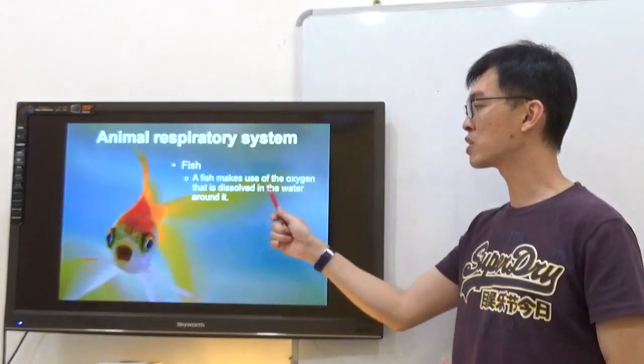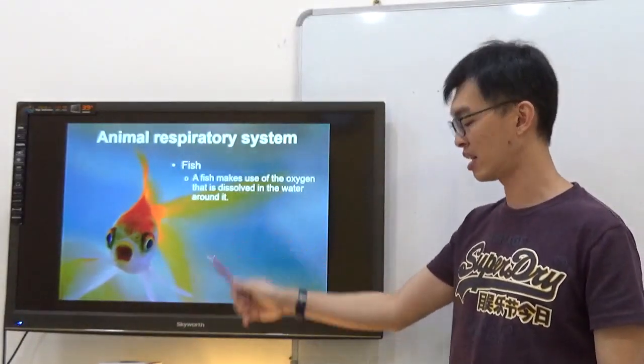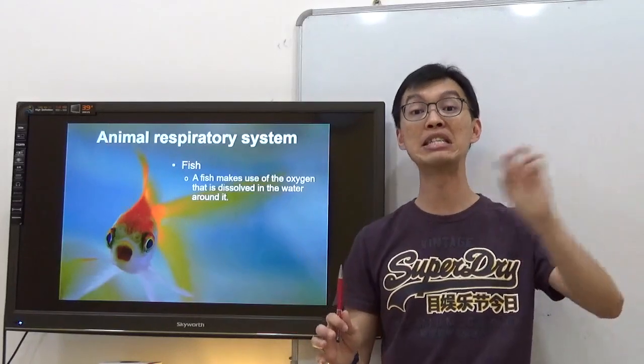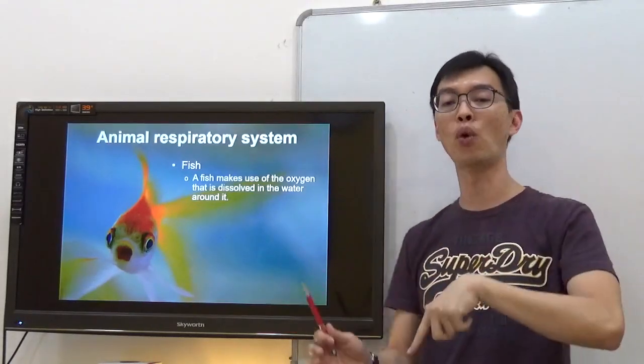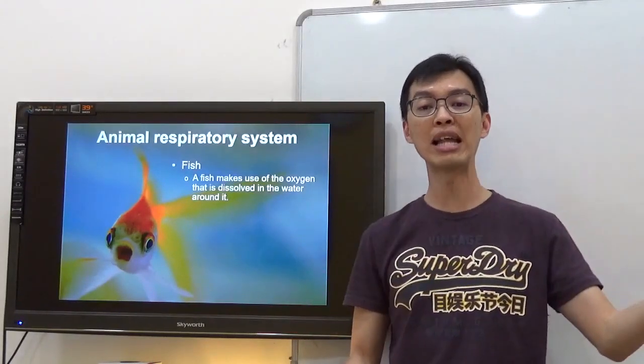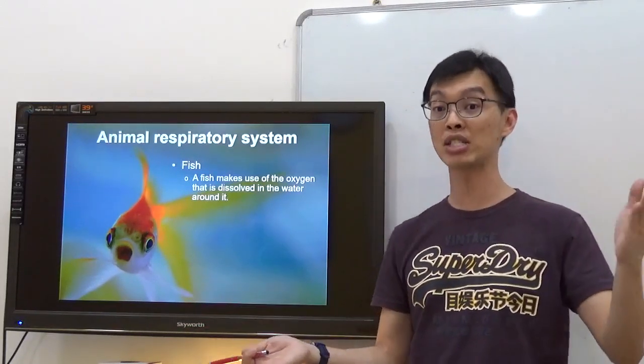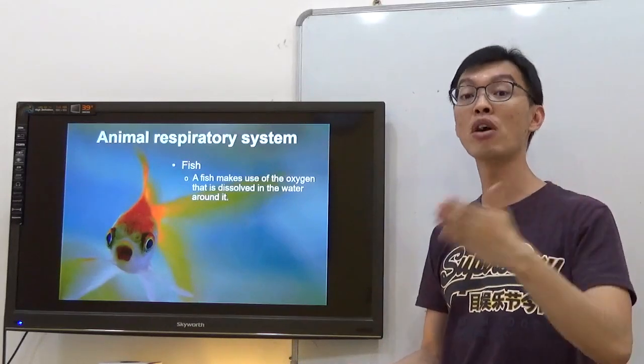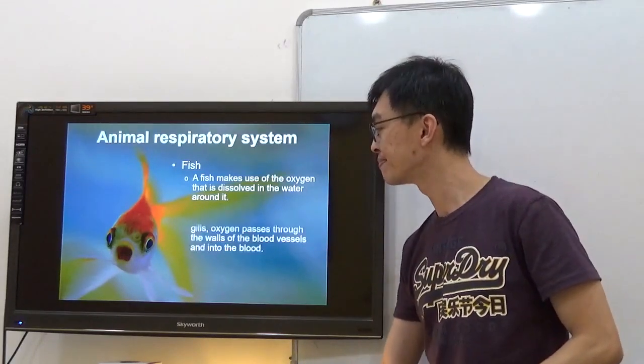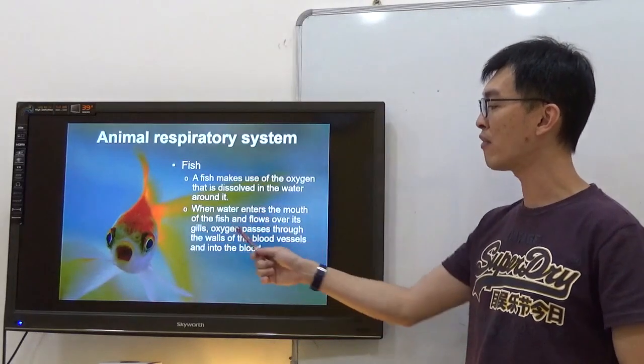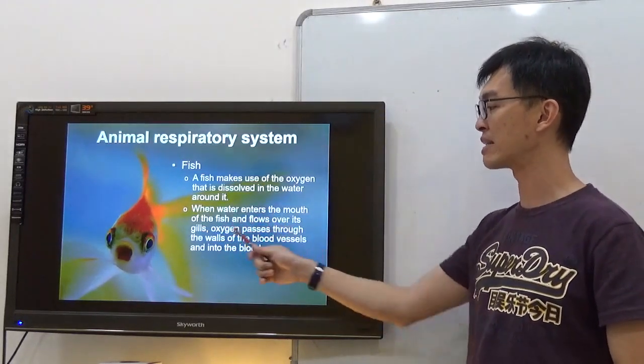A fish makes use of the oxygen that is dissolved in water around it. Gills trap dissolved oxygen in water. They can't stay on land because they can't take in oxygen from the air, but they can take in oxygen dissolved in water.